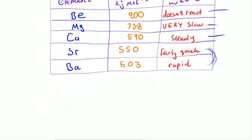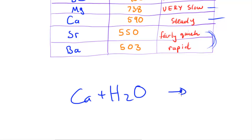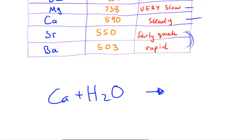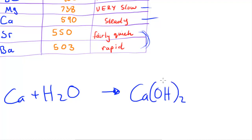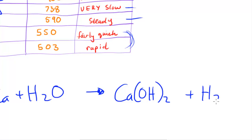Now if we make an equation for this reaction, let's choose calcium. Calcium reacts with water: Ca + H₂O. That would produce two products. The first product is a metal hydroxide — Ca(OH)₂ — since we need two OH groups because the charge on calcium is 2+, so to balance that out we need two OHs.